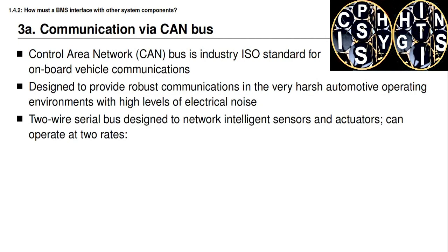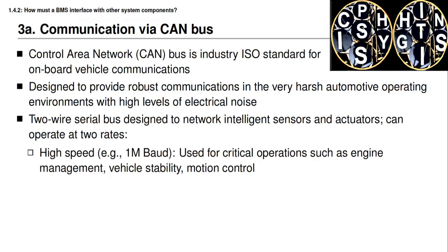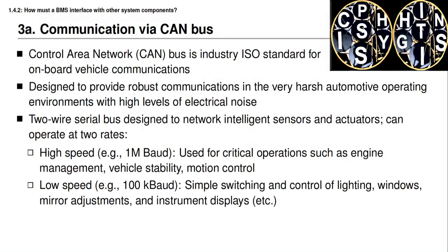The CAN bus uses two wires and communicates in a serial fashion, one bit at a time between two processors. It's designed to network intelligent sensors, actuators, and processors together, and it's able to operate at two rates simultaneously. One rate is considered high speed, at around one million bits per second or roughly one million baud, used for critical things such as engine management, vehicle stability, and motion control. The low speed operation works at about 100,000 baud and might be used for simple switching, control of lighting, power windows, mirror adjustments, and instrument displays where safety and performance are not as time critical.